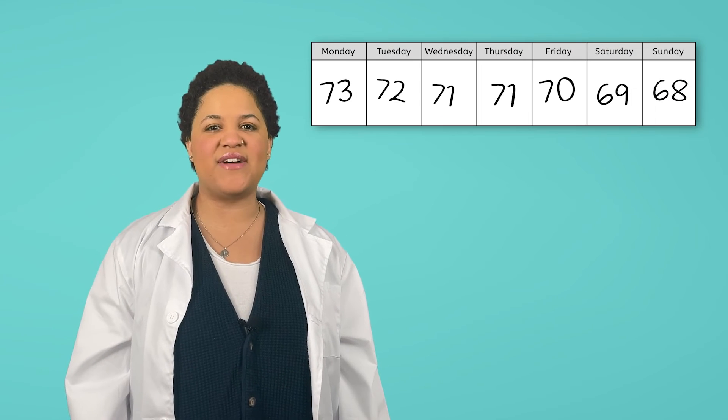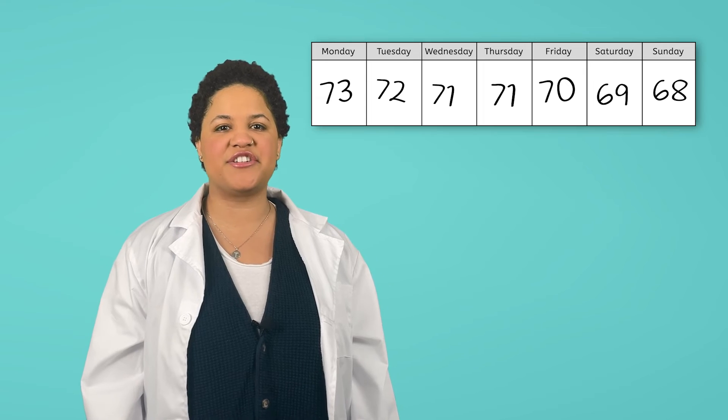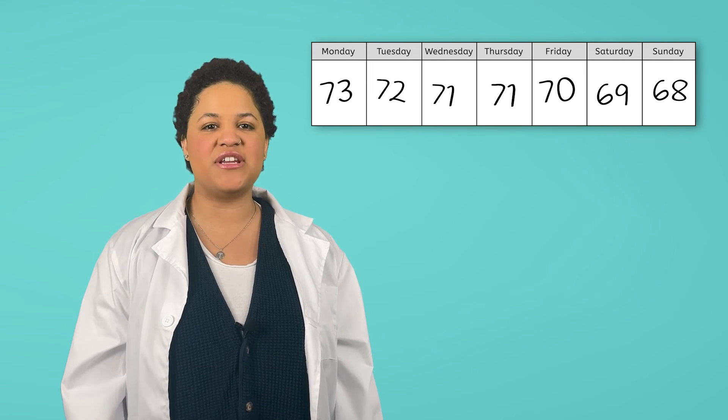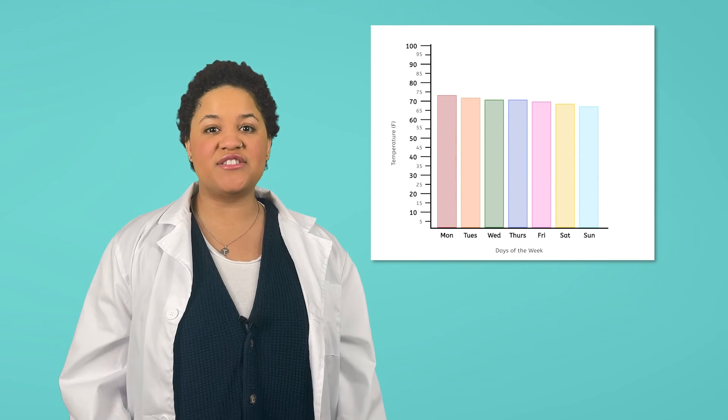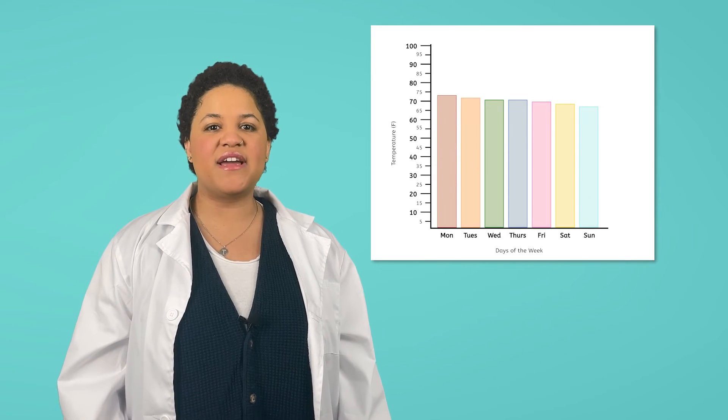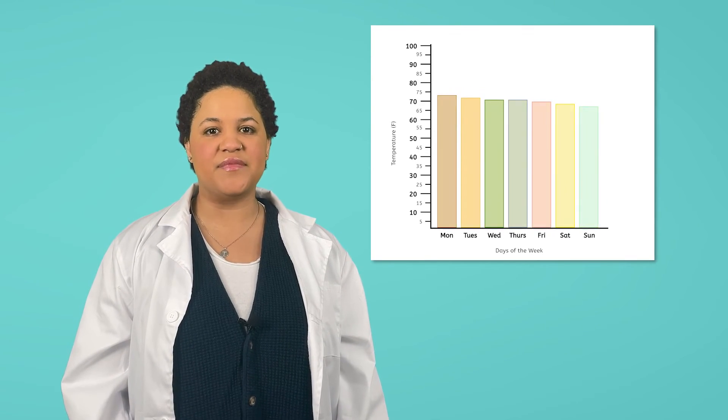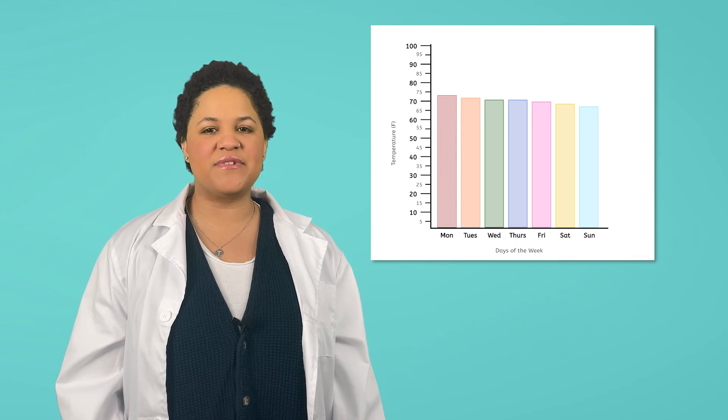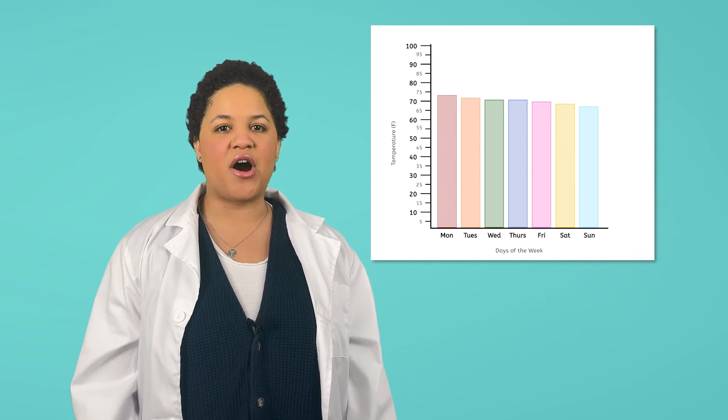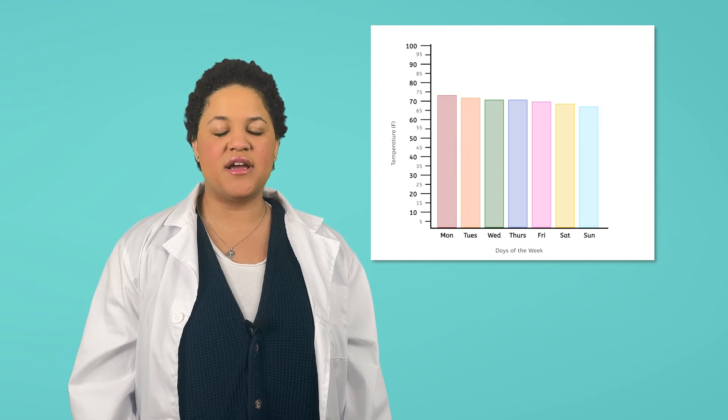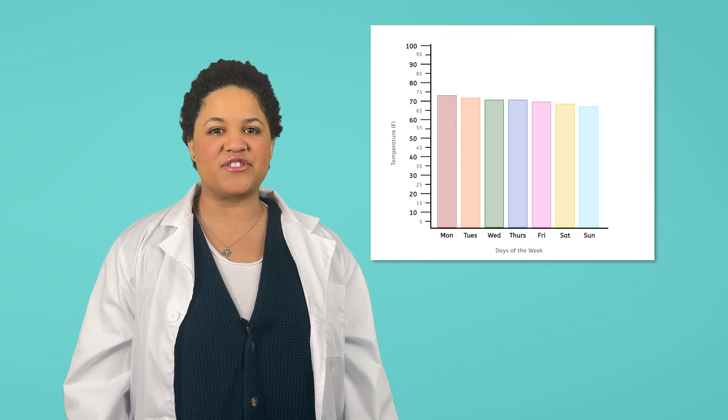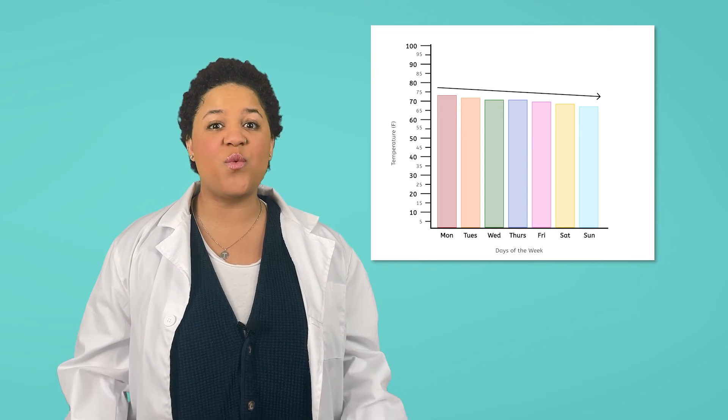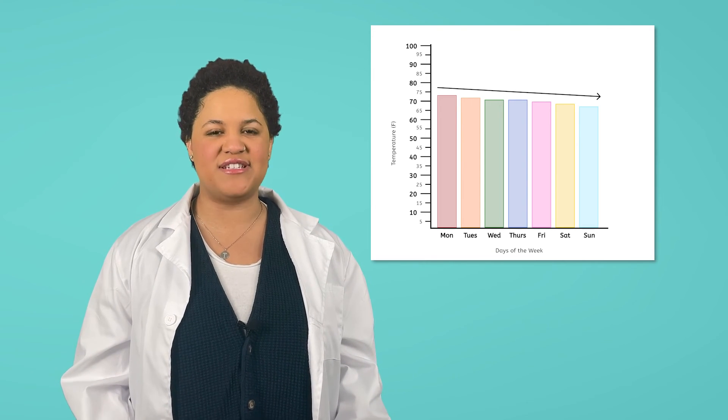You can see all of the temperatures I recorded here. Once I finished my investigation, I wanted to make a picture that would help make the information easier to see, so I made a graph. This graph is called a bar graph because of these bars you see here. In my graph, each bar represents the temperature for one day. The taller the bar, the higher the temperature was. The lower the bar, the lower the temperature was. Just looking at this graph, I can see that the temperature was getting a little bit cooler every day.